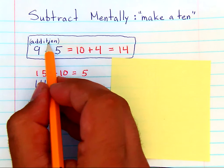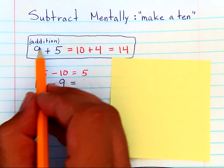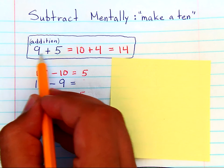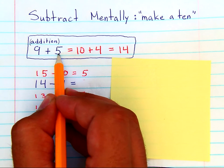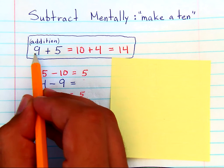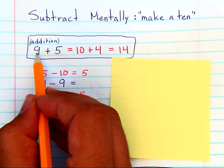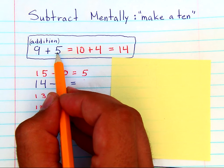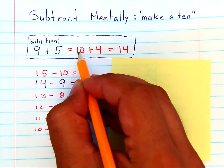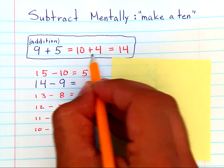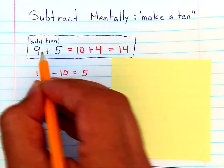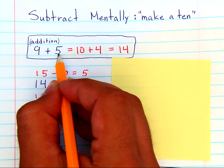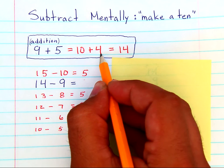Now in addition, we talk about problems like 9 plus 5, and adding 1 to the 9 and taking 1 from the 5. If you take 1 from the 5 and add it to the 9, 10 plus 4 is going to get you the same answer as 9 plus 5, but this one's easier to solve in your head.